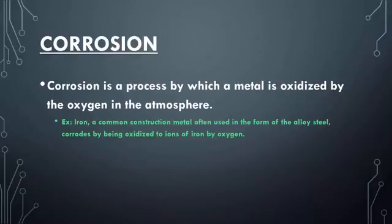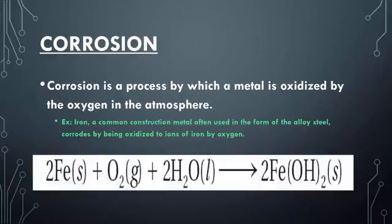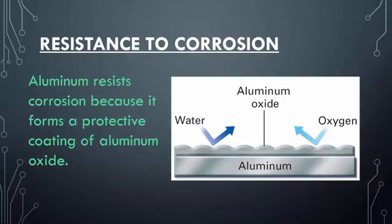Corrosion, which is rust, is a process by which a metal is oxidized by the oxygen in the atmosphere. There are different types of corrosion: silver tarnishing and iron rusting are both classified as corrosion. Iron mixing with oxygen and water in the atmosphere naturally produces iron hydroxide. Aluminum is resistant because it forms that protective coating, which blocks water and diatomic oxygen in the atmosphere — so aluminum oxide acts as a protective coating.